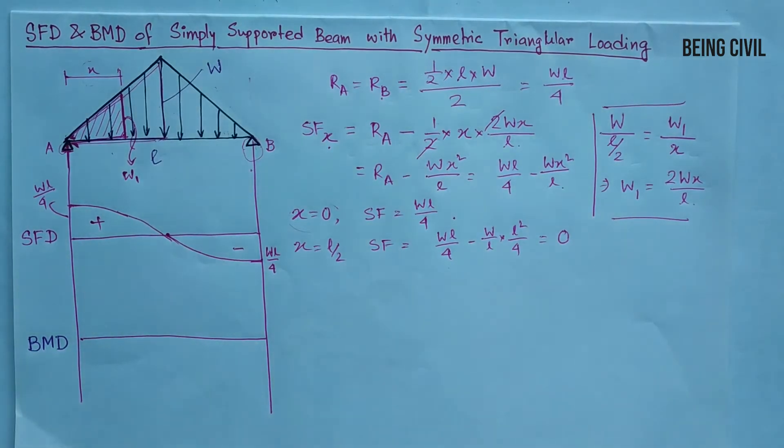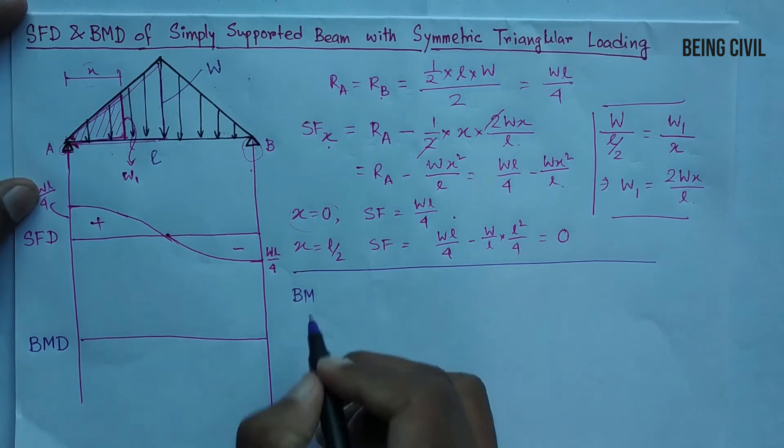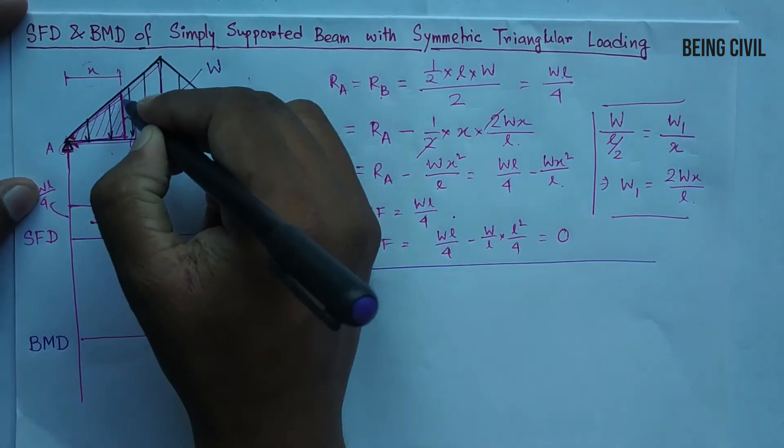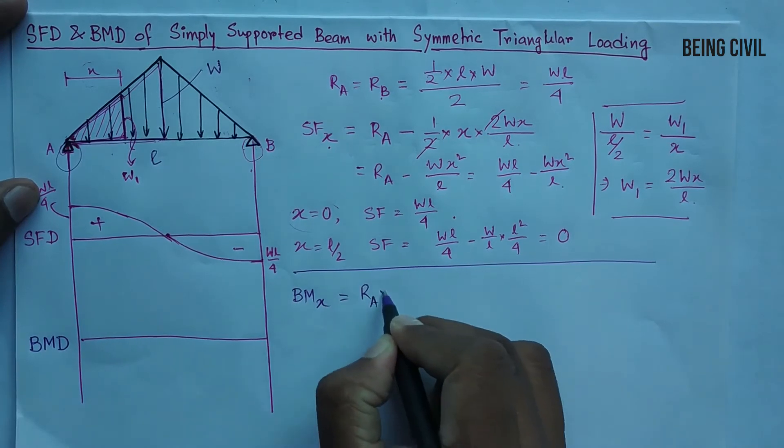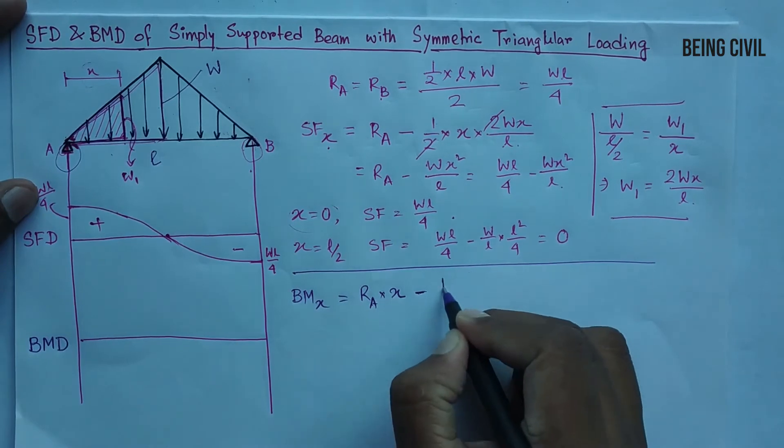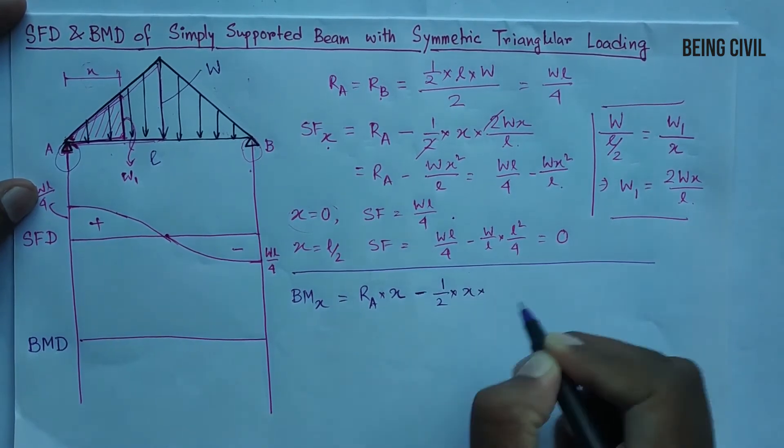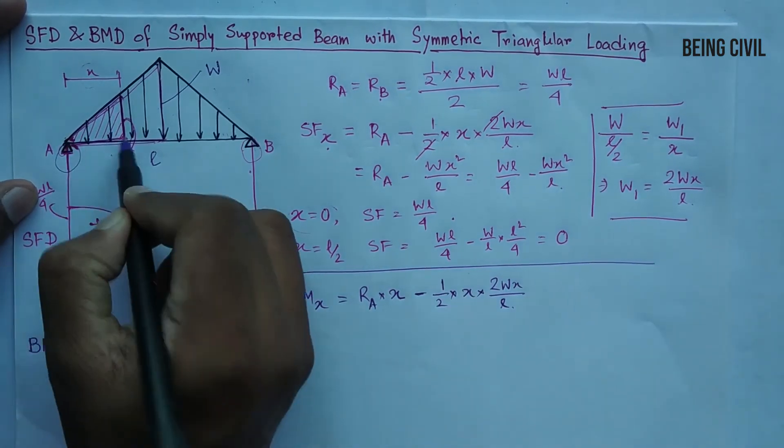So we got the shear force diagram. Now coming to the bending moment diagram, bending moment at a distance of x at this section will be moment for Ra, Ra into x, minus moment for this force. The force is half into x into 2Wx by L, it is the area of the triangle.